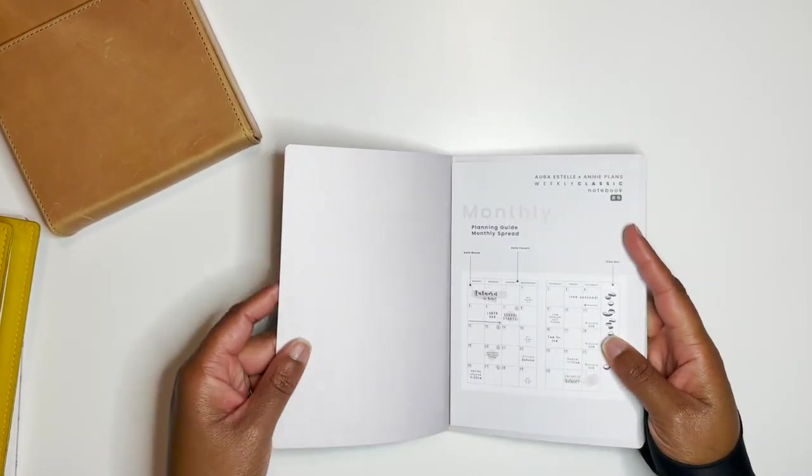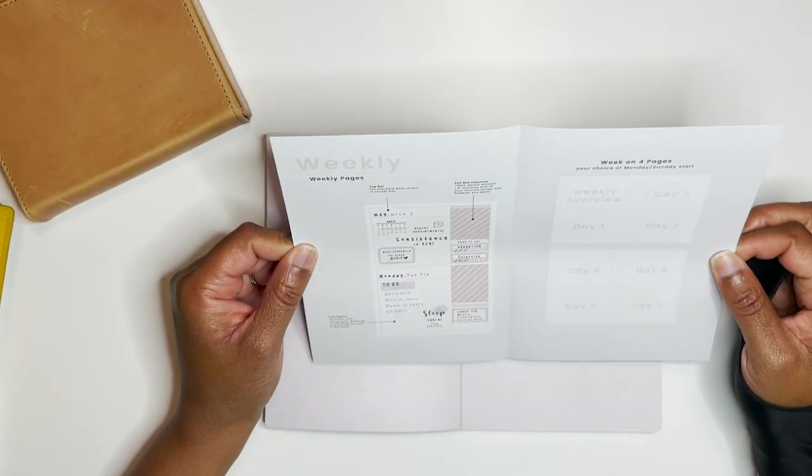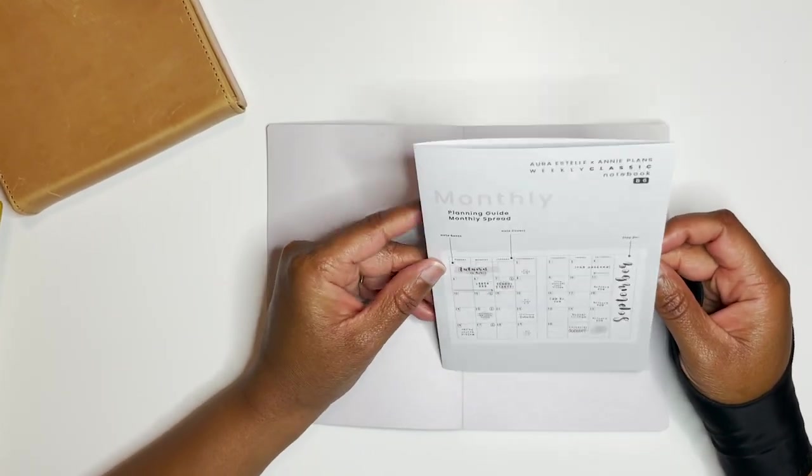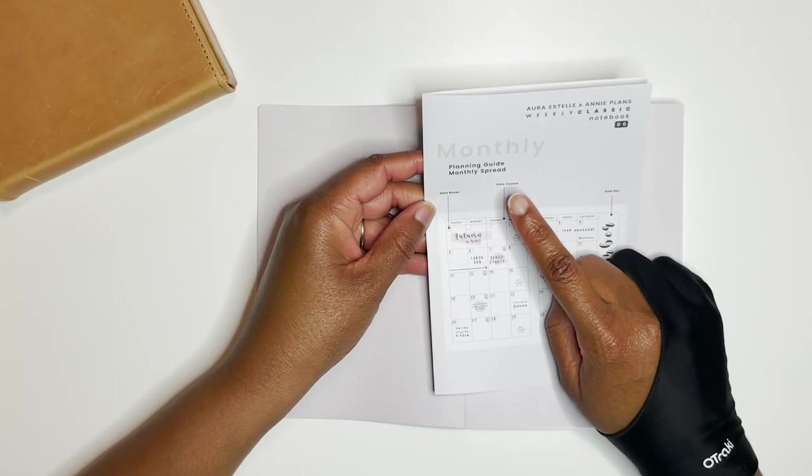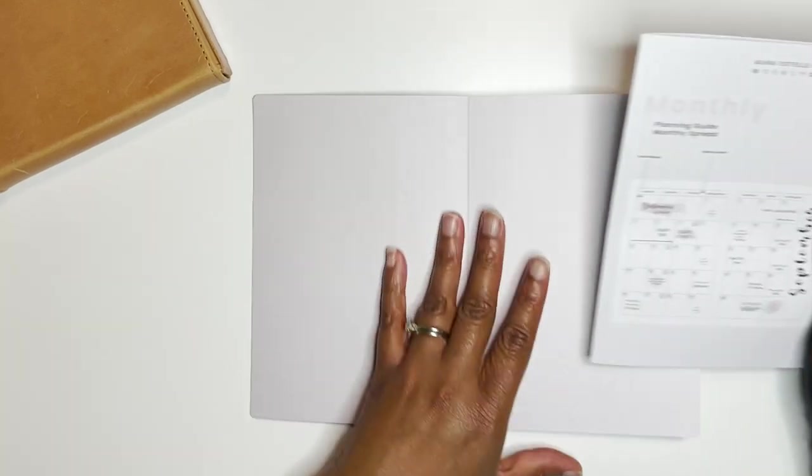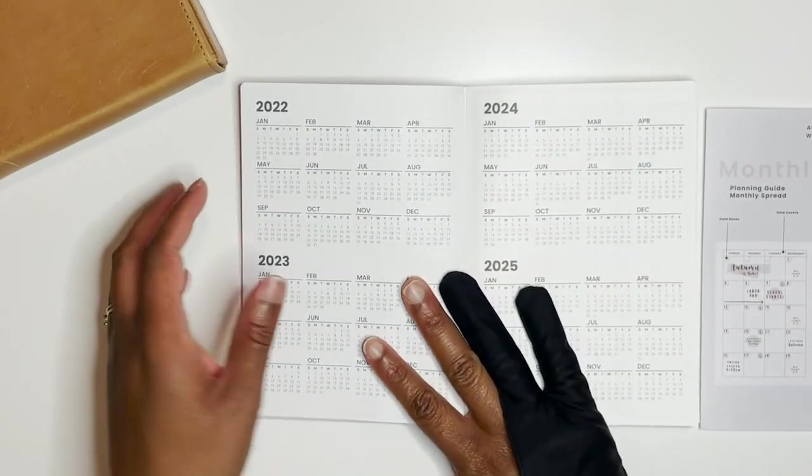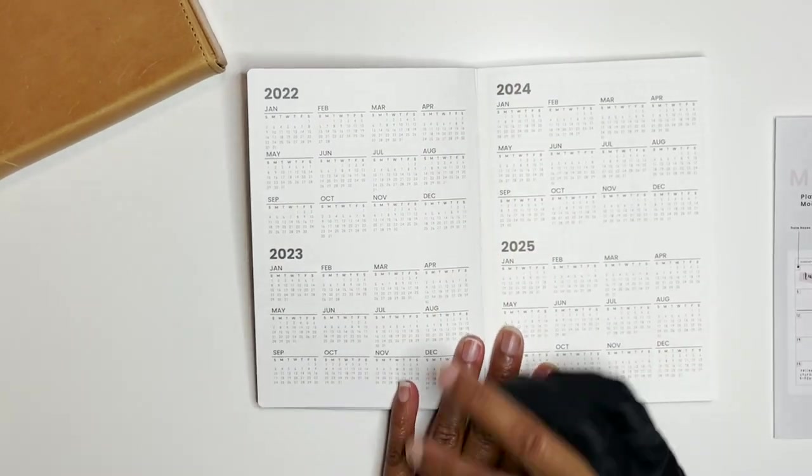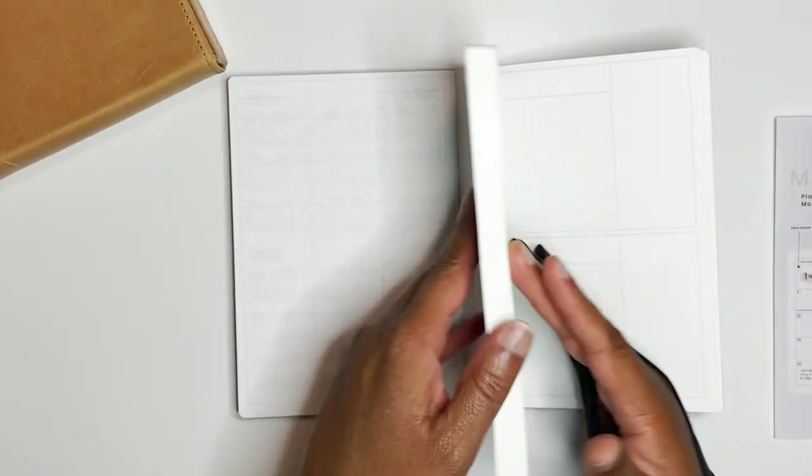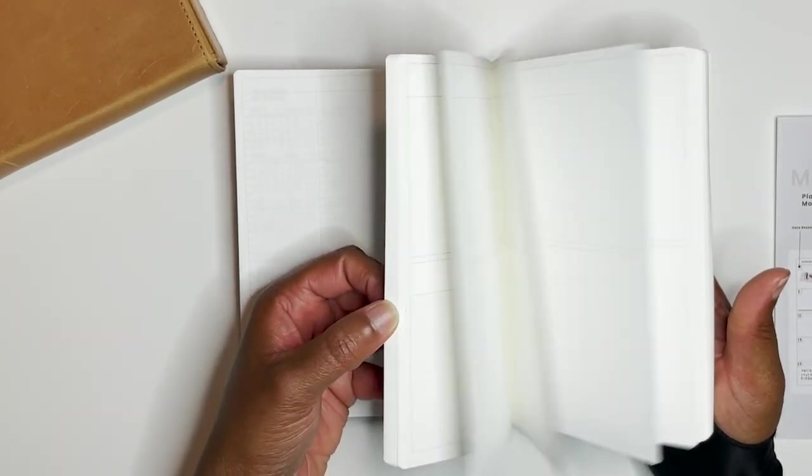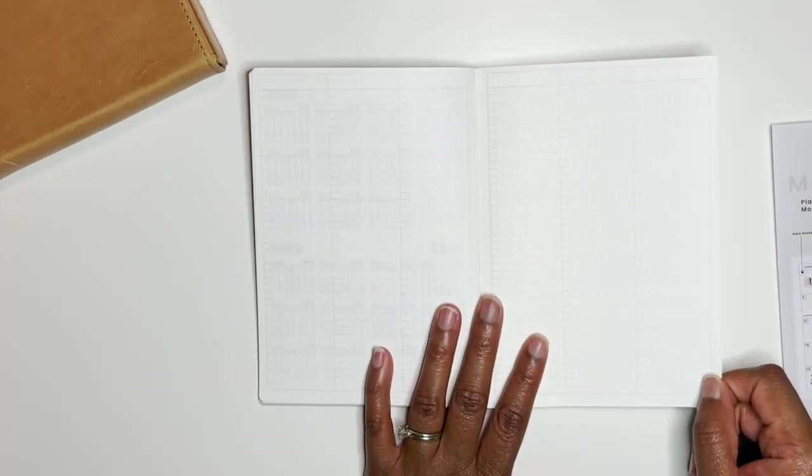We open it up and they have just a little sheet with how to use it. Weekly classic notebook planning guide, monthly spread. Okay, so this is technically set up where you can use it not only for next year but the next few years.